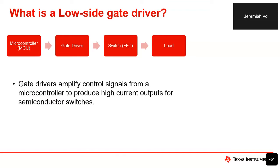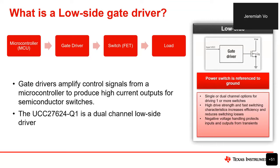Typically, this gate driver will take a low voltage input from the microcontroller, amplify it, and output a higher voltage for the switch to switch the load. The UCC 27624Q1 is a dual channel low side driver. Dual channel means it has two inputs and two output channels, and low side drivers have the power switch referenced to ground. Low side gate drivers need high drive strength and fast switching characteristics for increased efficiency, and also protection from transients with negative voltage handling.